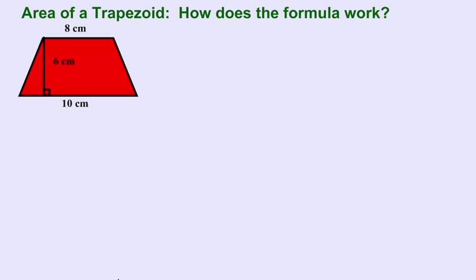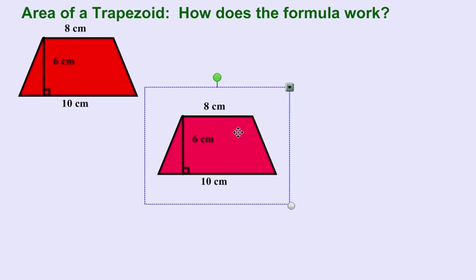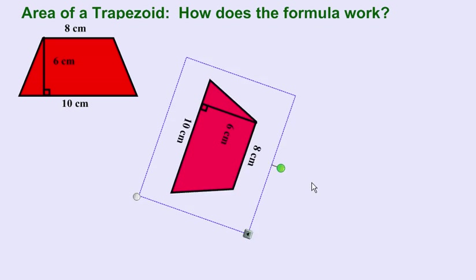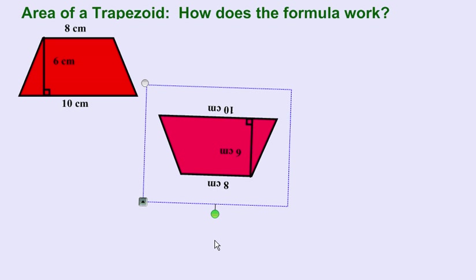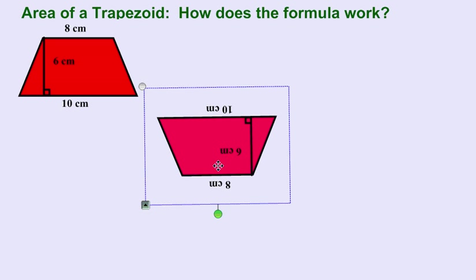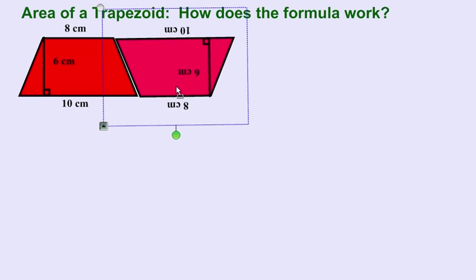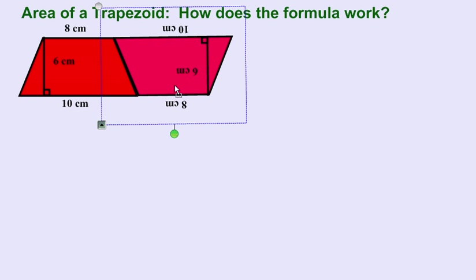What I'm going to do is duplicate this trapezoid, the exact same size and shape, and I'm going to rotate it 180 degrees, and then I'm going to translate it right next to our original trapezoid.